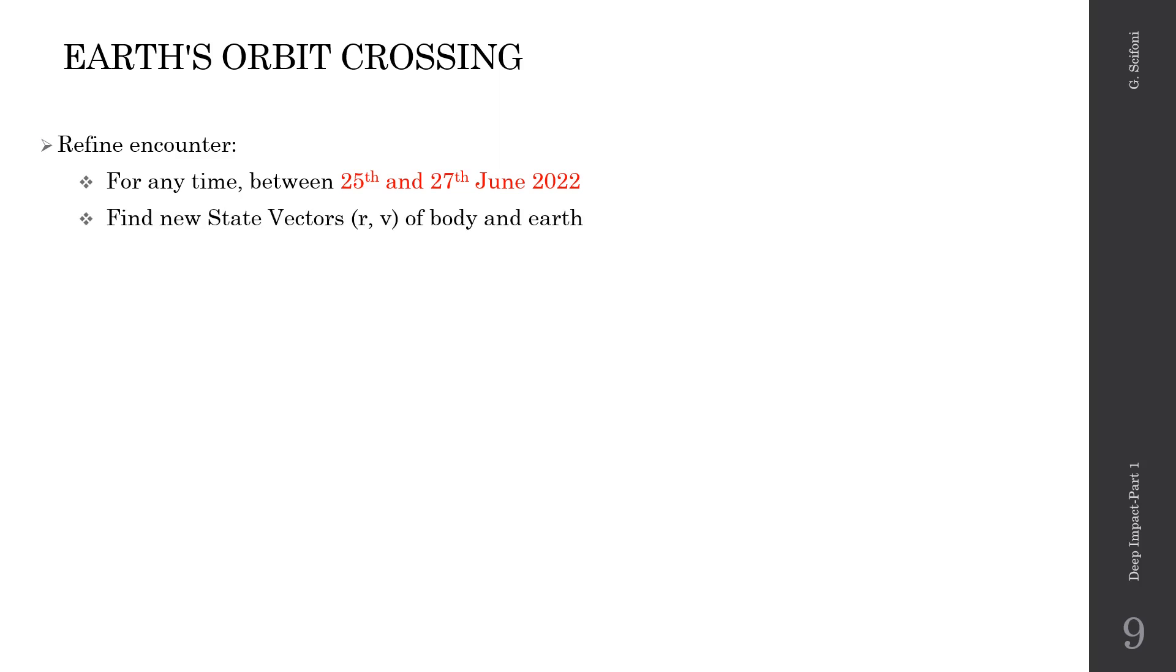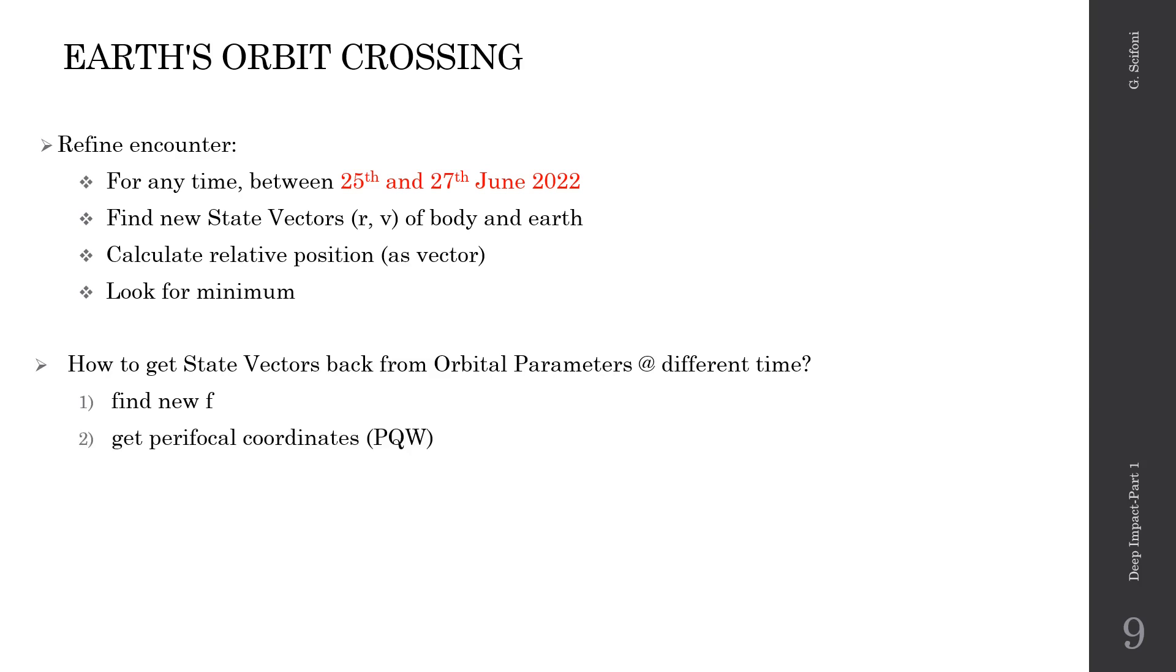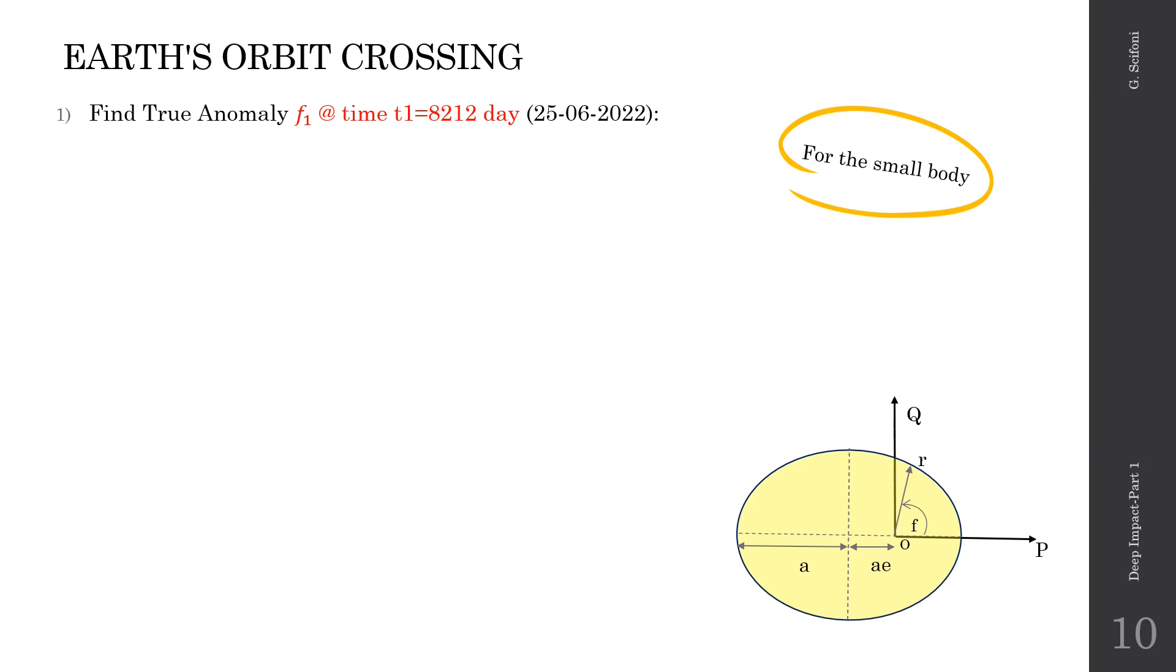We focus our study in the interval between 25th and 27th of June 2022, where the encounter may occur. And for any time of the interval, we get the state vectors of the two bodies, also r and v. And from them we calculate the relative position as a vector, and we search for the minimum of that position. Our task is to get the state vectors back from the orbital parameters at a different time. We explain it in three steps. First, we find the true anomaly at a different time frame. Then we get the perifocal coordinates, the ones on the orbital plane. Finally, we get the coordinates in the heliocentric reference back by using rotation matrix.